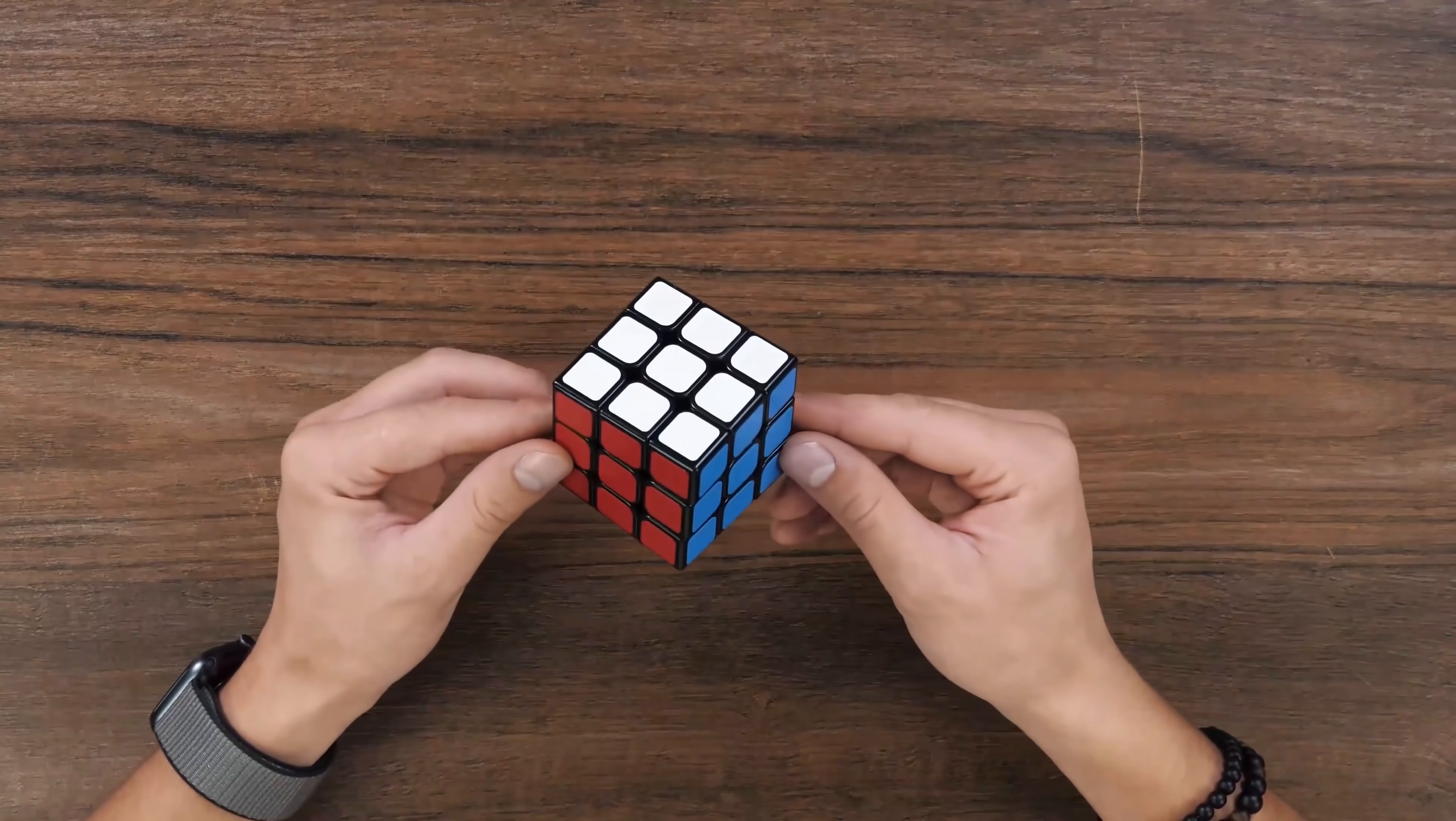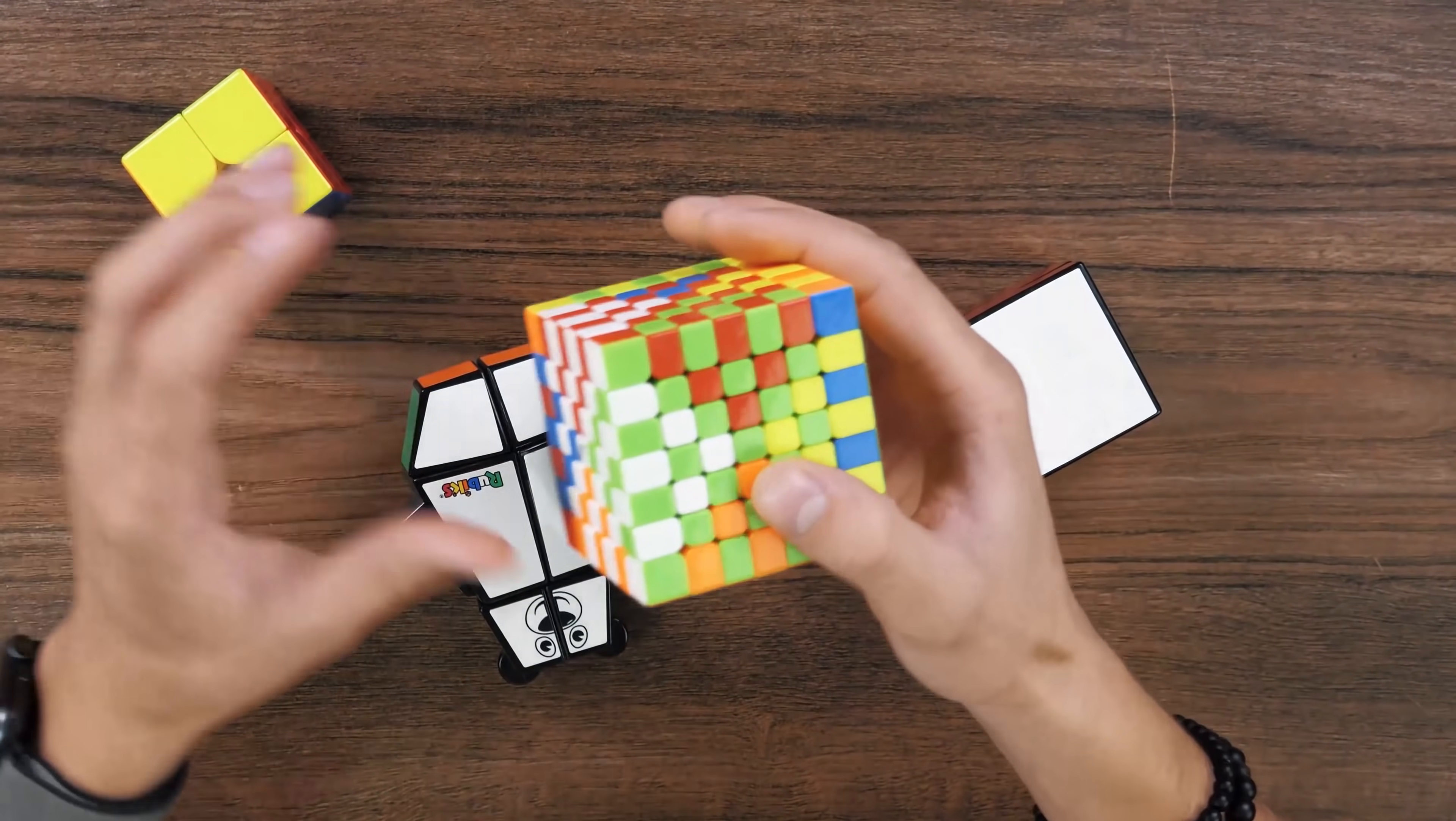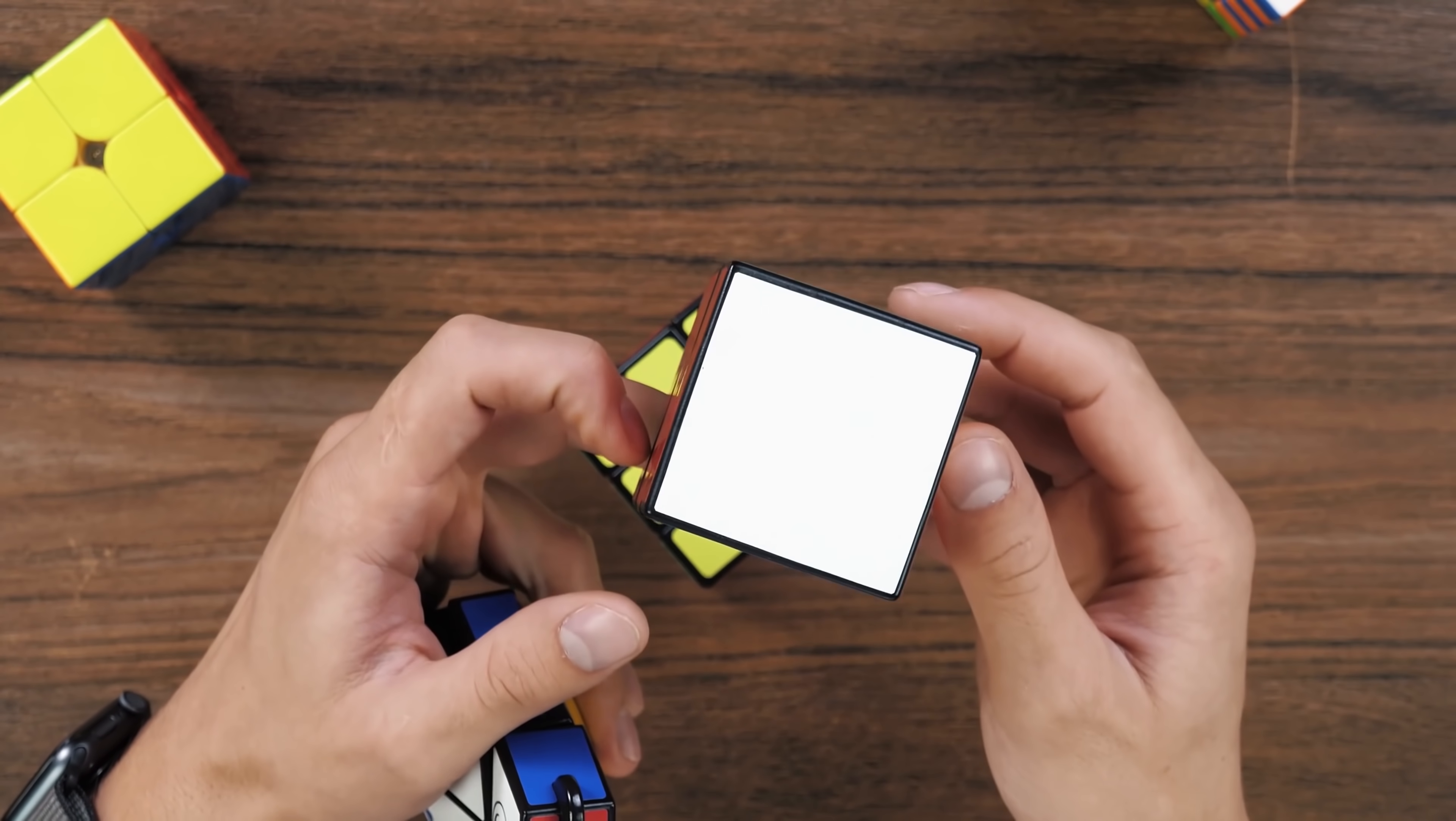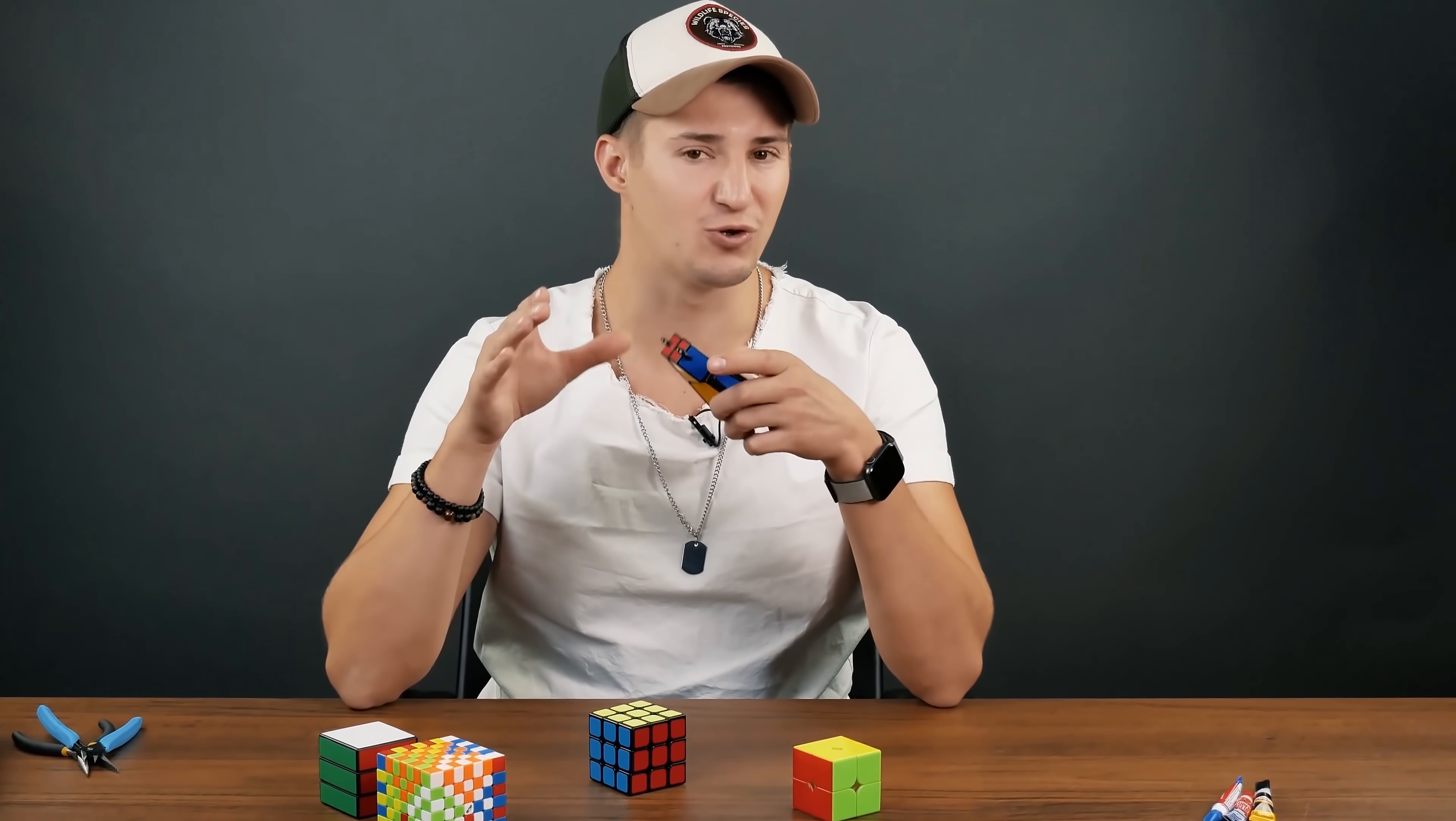Rubik's Cube is the most popular puzzle on the planet, but Rubik's Cubes can be completely different. For example, these are 2x2. They are simple. Or, for example, 7x7. More difficult. There are also cuboids. These are cubes with the different number of layers on the sides. For example, this one here is a 3x1x1. Or this one, Jared the Bear, which is a 2x3x1 cuboid.